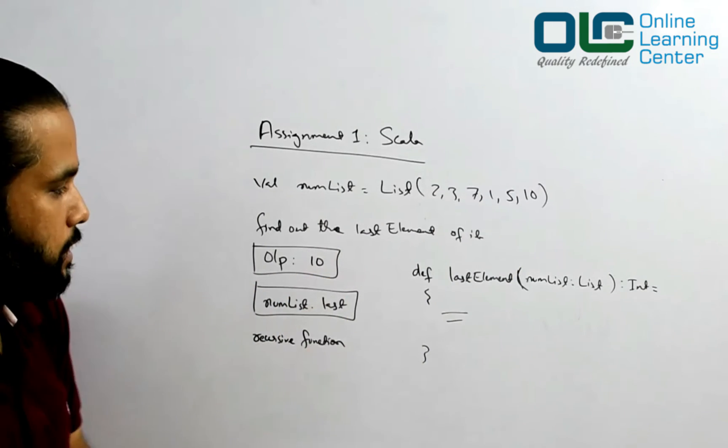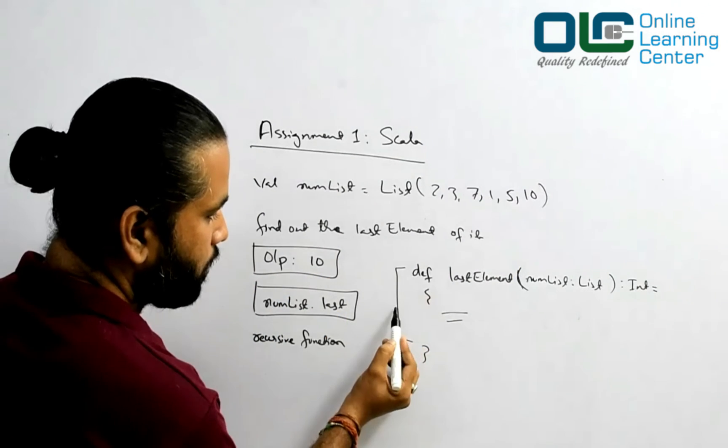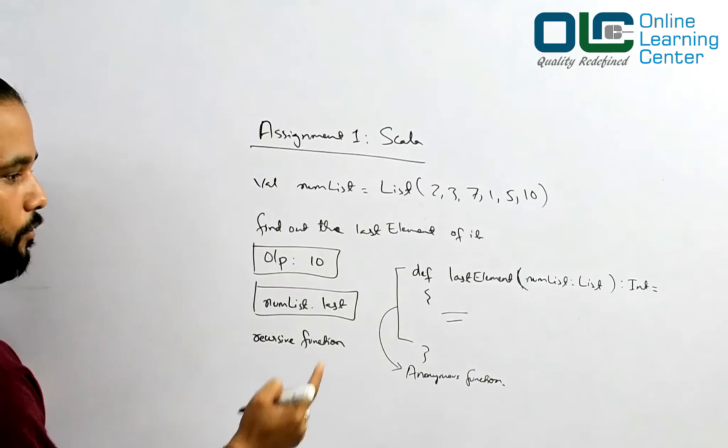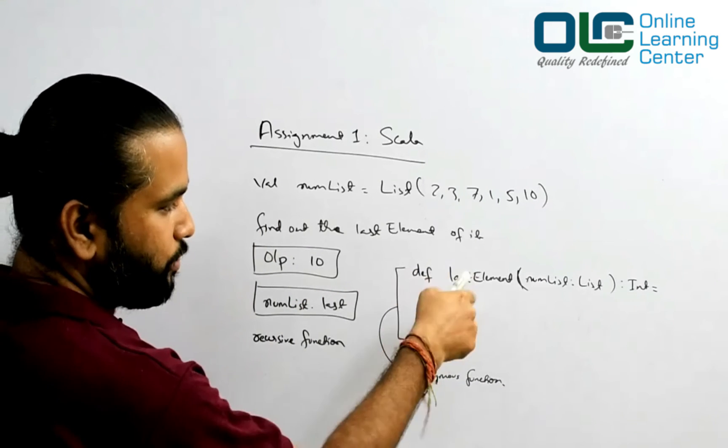Now if you're able to do this successfully, try converting this into an anonymous function. Once you're done with this...